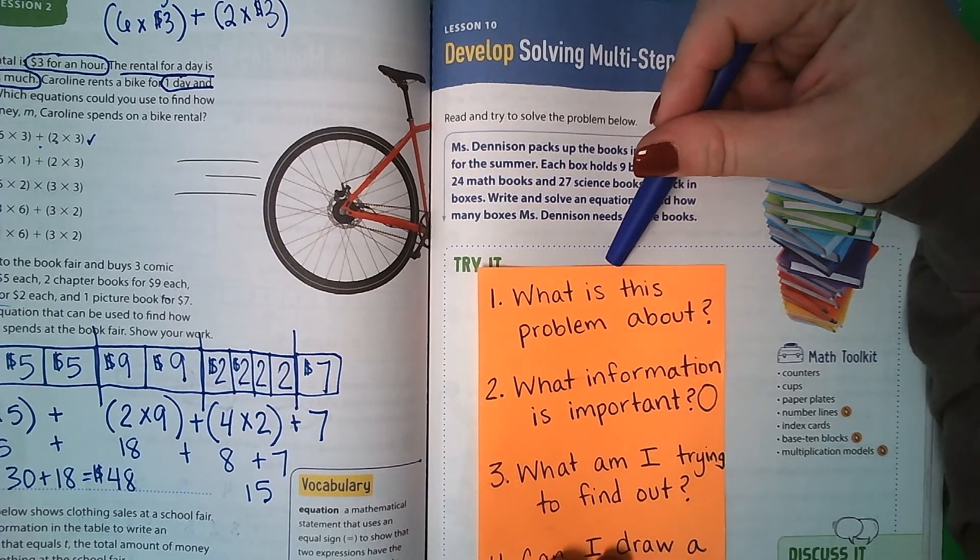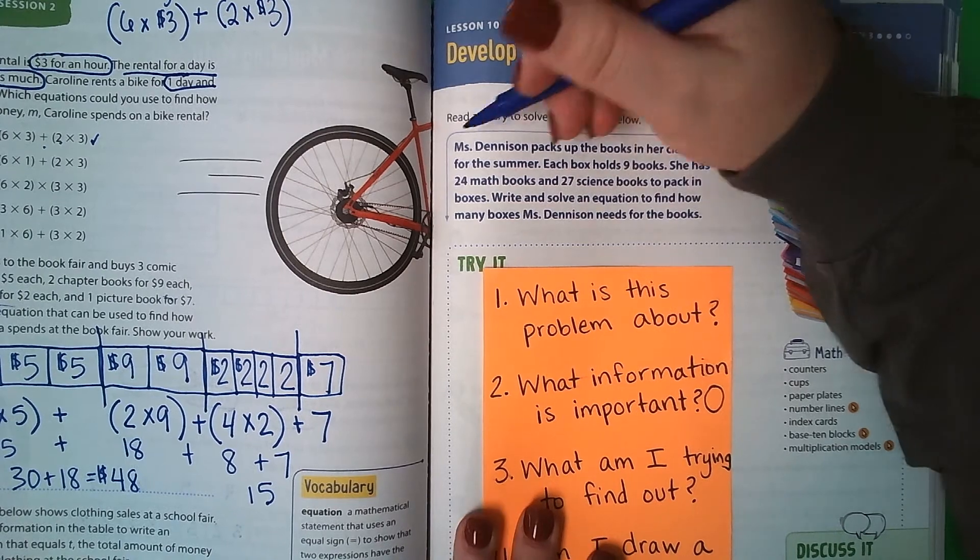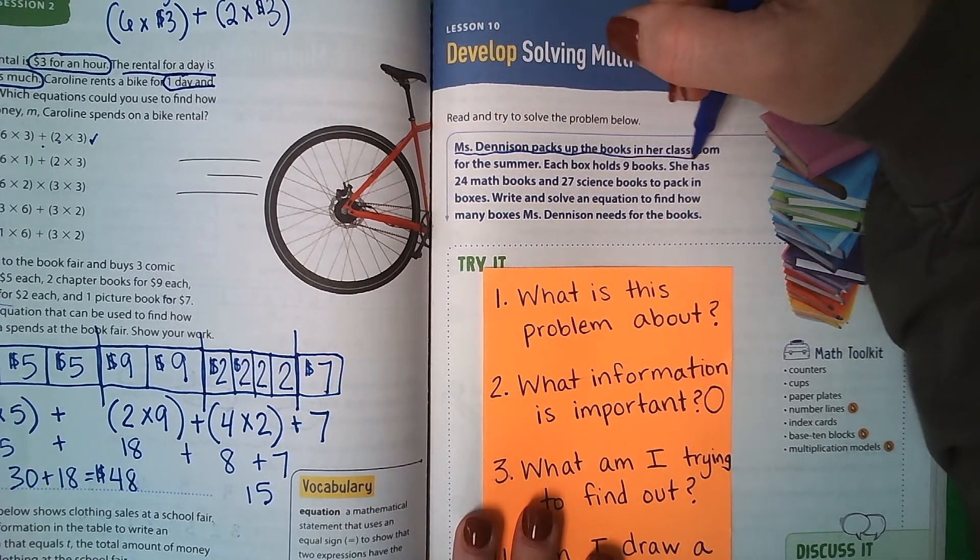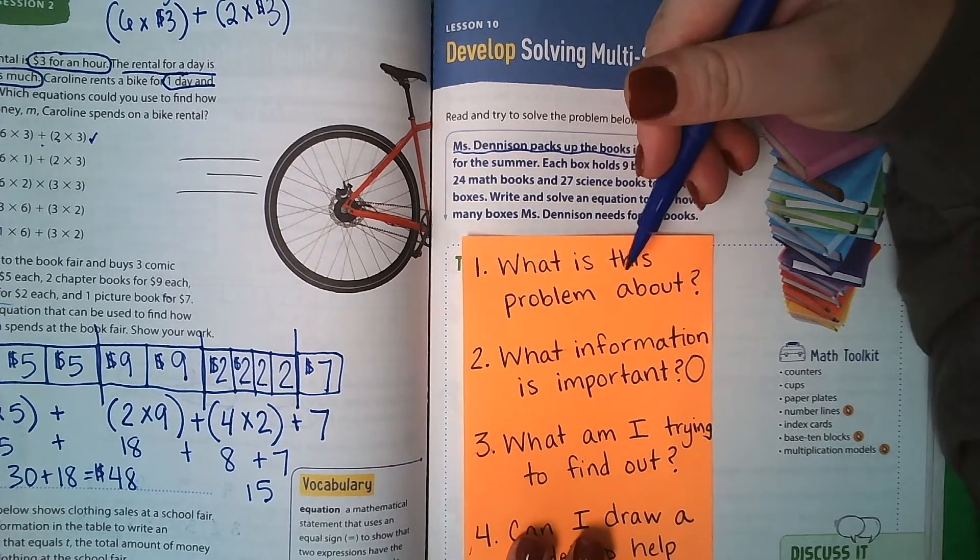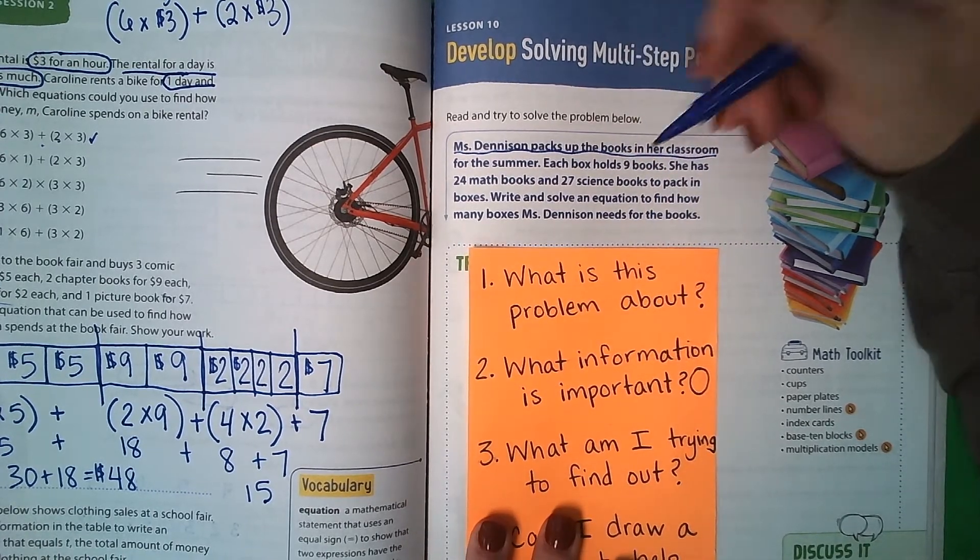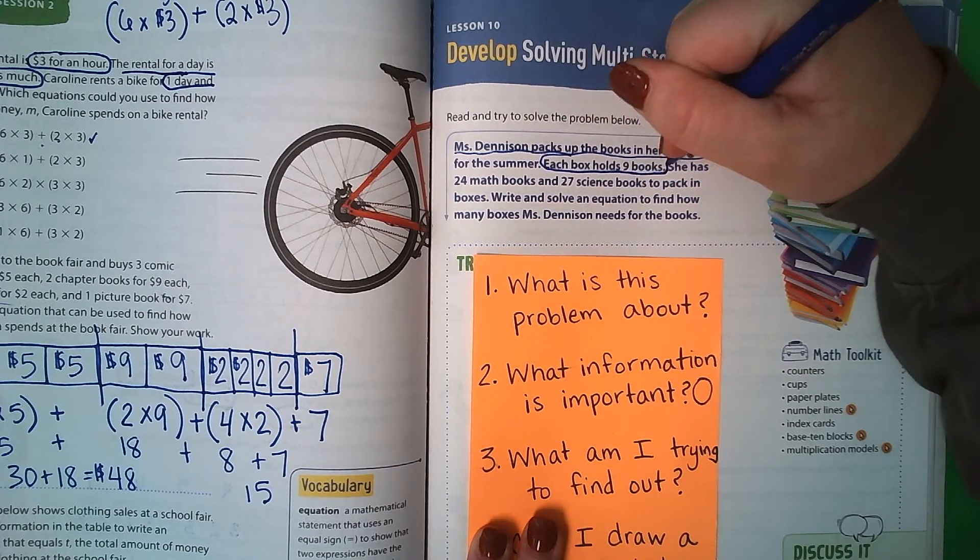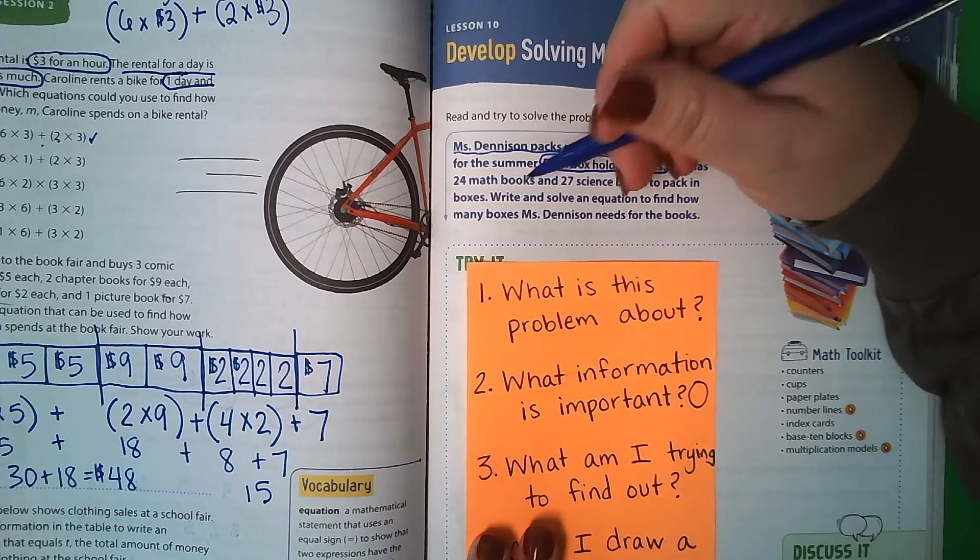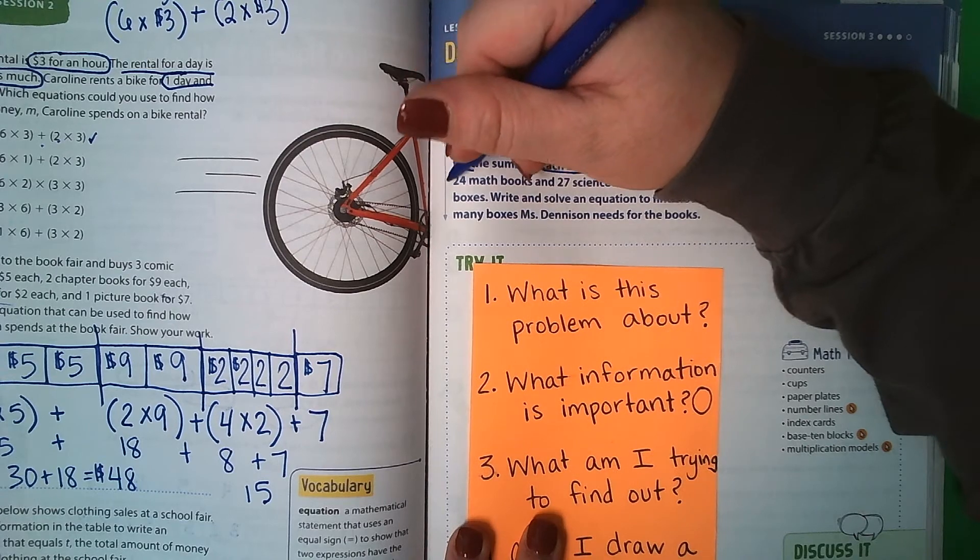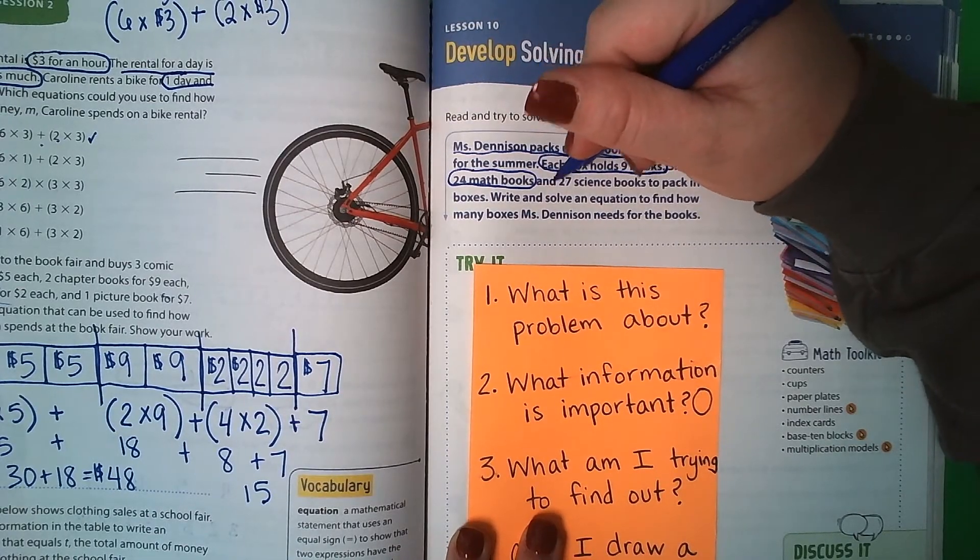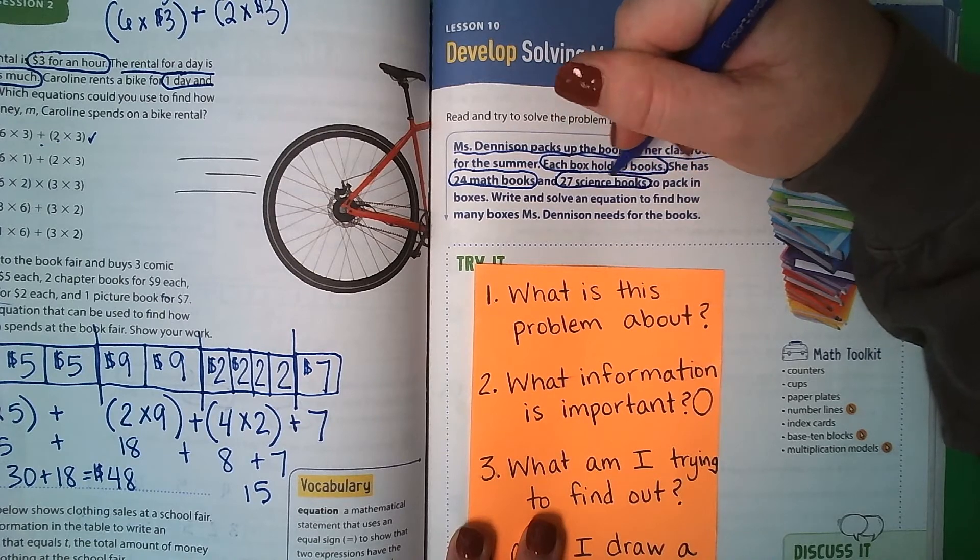Okay, so first, what is this problem about? Well, it's about a teacher, Ms. Denison, packing up books in her classroom. What information is important? It's important to know that each box holds 9 books. It's also important to know that she has 24 math books and that she has 27 science books to pack.